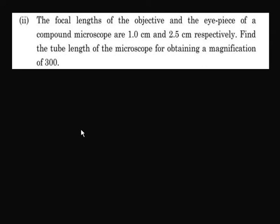The focal lengths of the objective and the eyepiece of a compound microscope are 1 cm and 2.5 cm respectively. Find the tube length of the microscope for obtaining a magnification of 300.